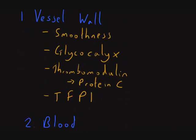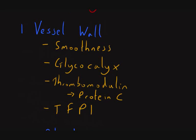Starting with the vessel wall factors: the smoothness of the vessel wall itself has an important anticoagulant effect, preventing adherence and initiation of the intrinsic pathway. Similarly, the glycocalyx is a mucopolysaccharide layer that actively repels platelets and clotting factors, preventing initiation of the coagulation cascade and platelet function.